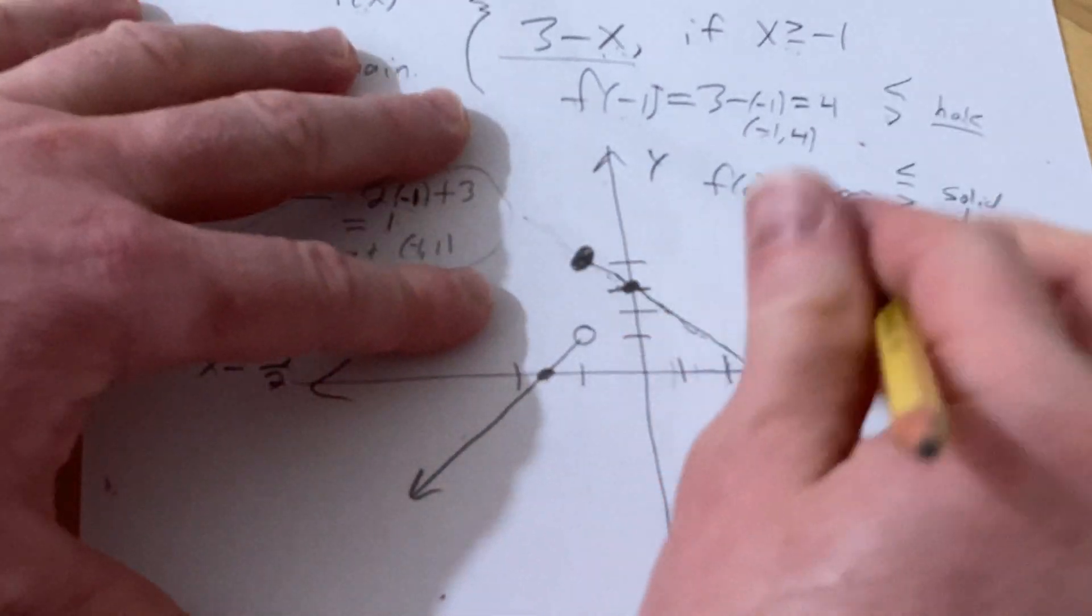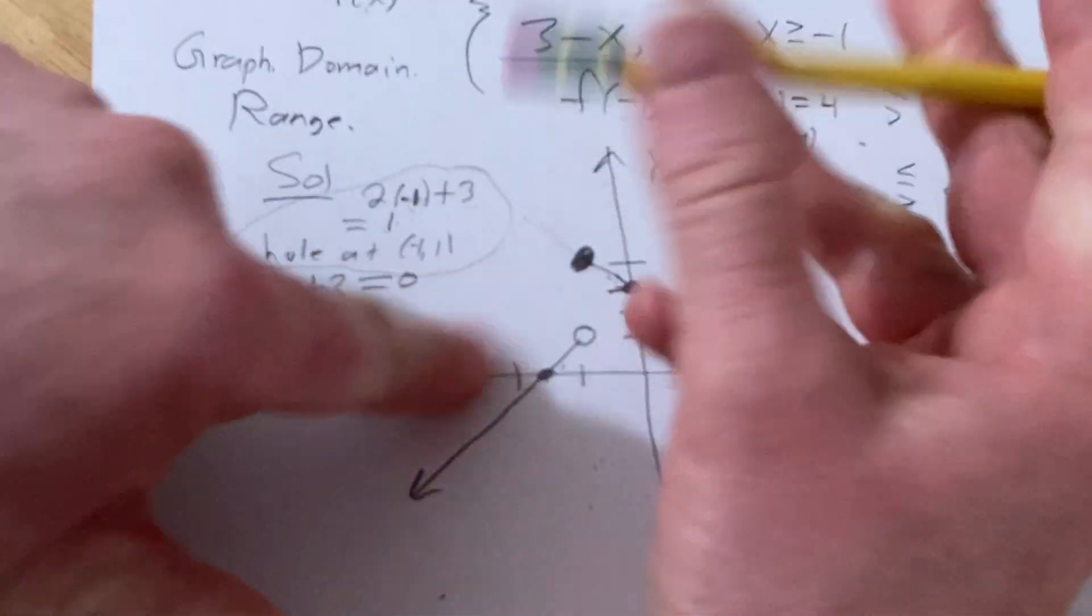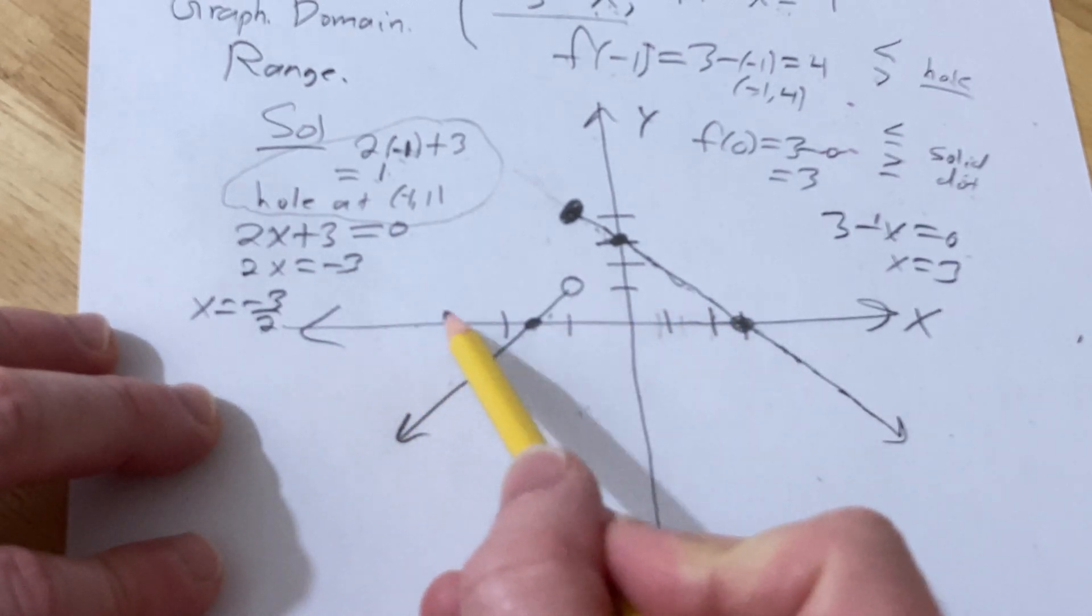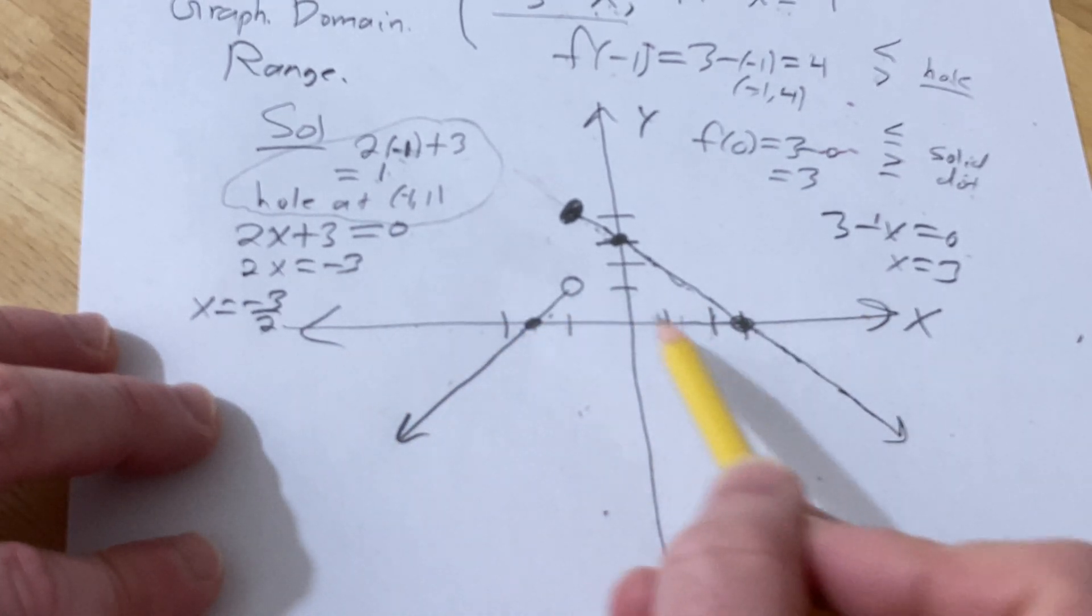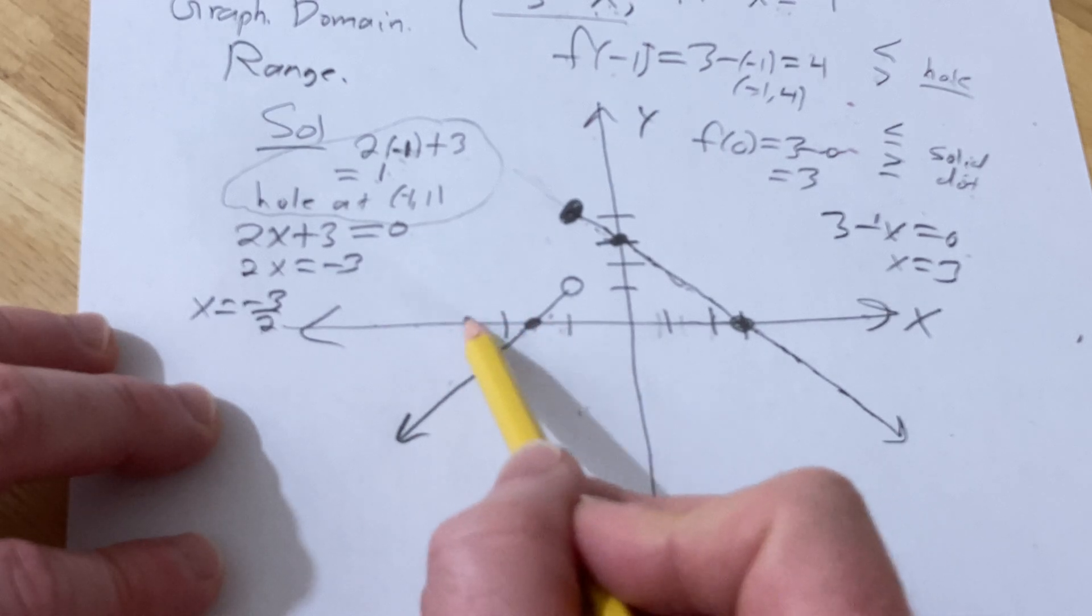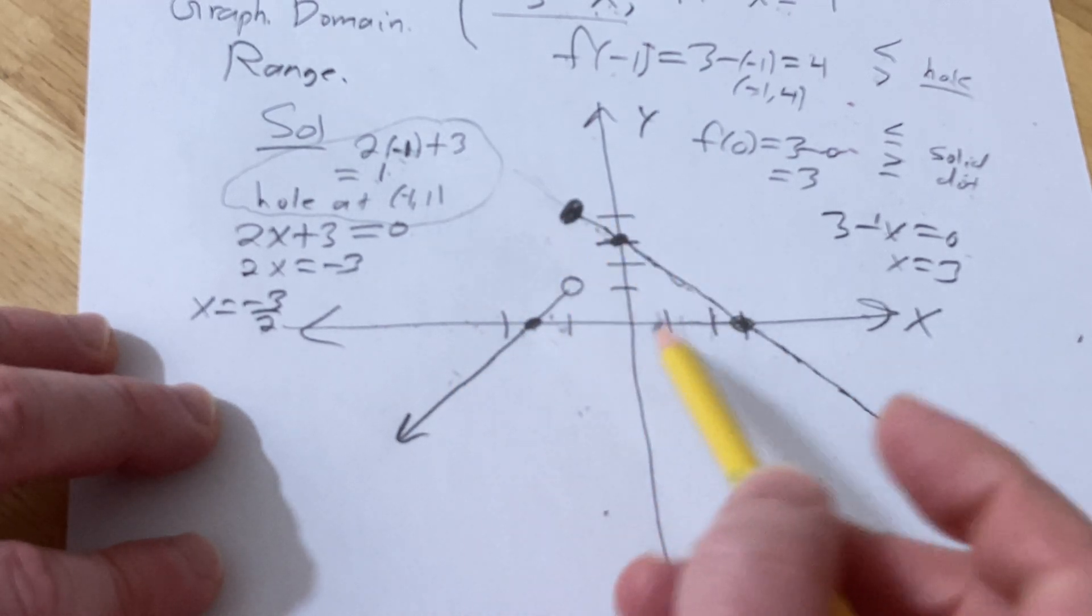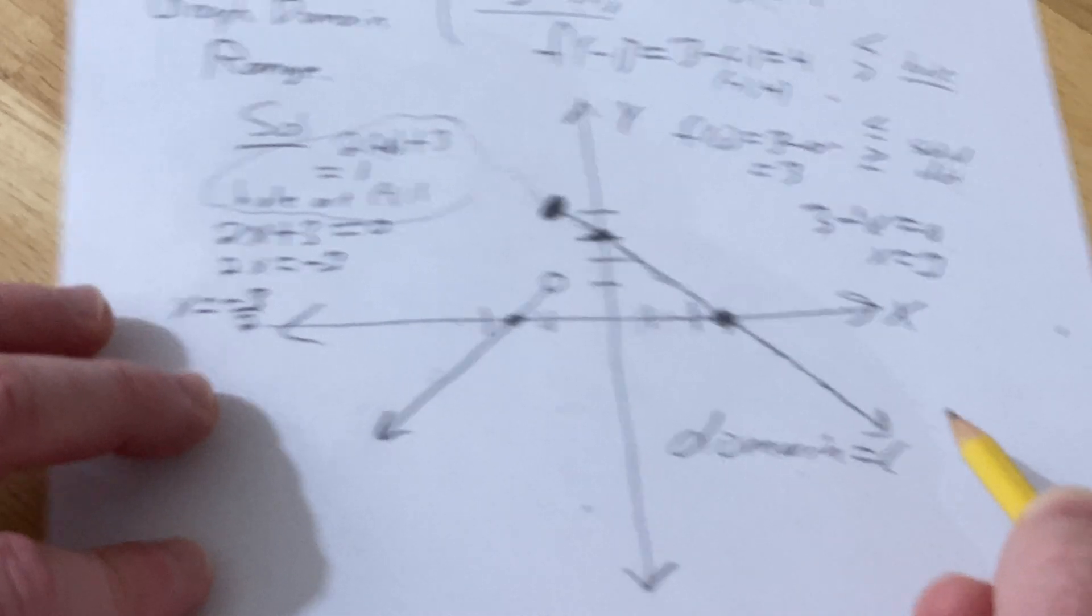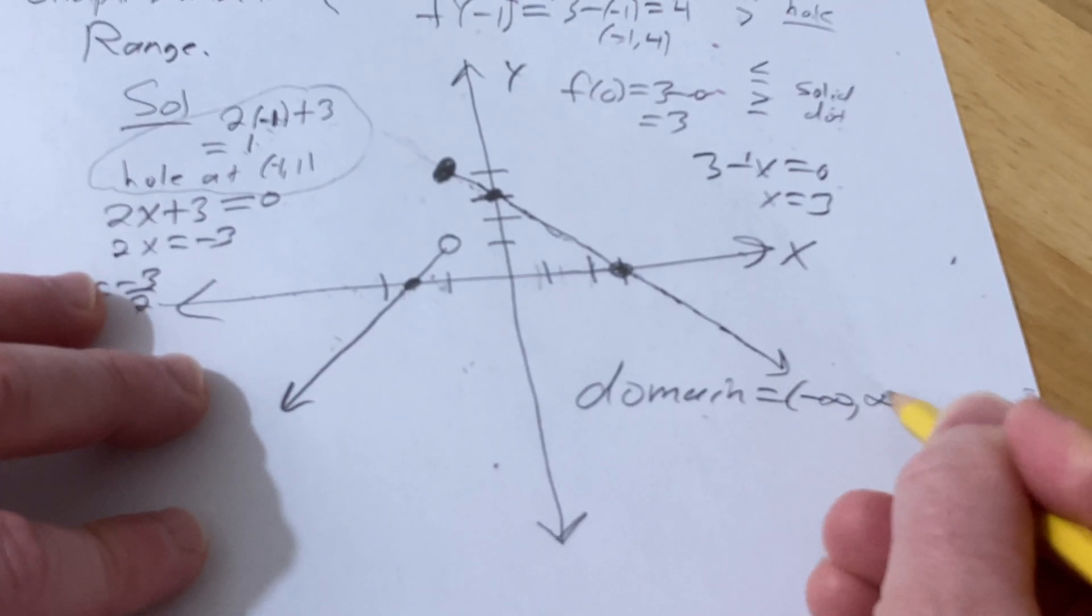So to find the domain, make sure you don't see that there, there's no line starts here. To find the domain is all the x-values that lead to y-values. Every single x-value here is going to give you a y-value. No matter what x-value I pick, it's going to give me a y-value. Even this one, right, it's going to give me a y-value here. So the domain is negative infinity to infinity.